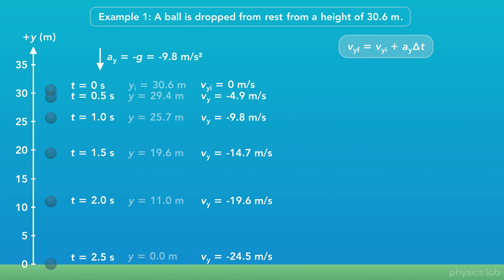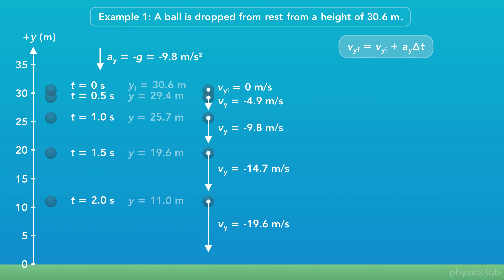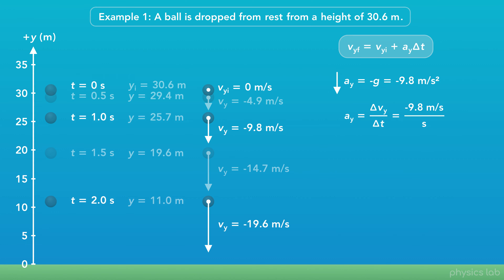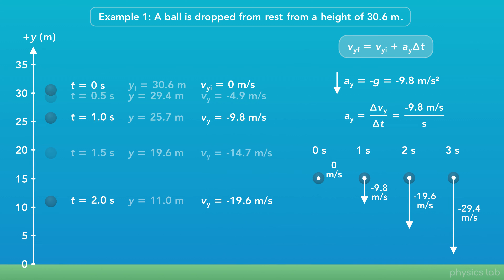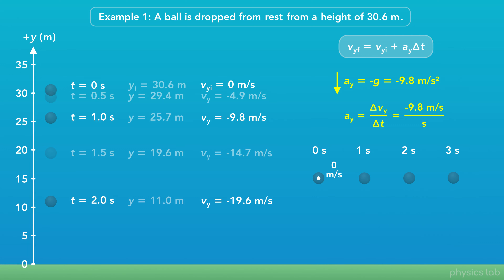Here's what the ball's velocity vector looks like from 0 to 2 seconds. The magnitude of the velocity and the length of the vector increase as the ball falls. The ball is accelerating at negative 9.8 meters per second squared, so the velocity changes by negative 9.8 meters per second every second. If we line up the velocity vectors at each second, we can see how they change over time — that change between each second is the acceleration.